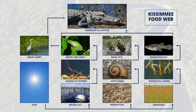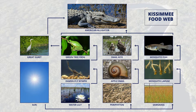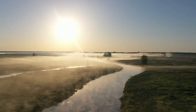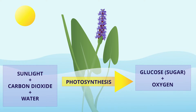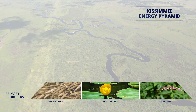Food webs illustrate the interconnectedness, interactions, and energy flow of plants and wildlife within an ecosystem. If one part of the food web is changed, it has cascading effects because everything is connected. The primary energy source in a food web is the sun.